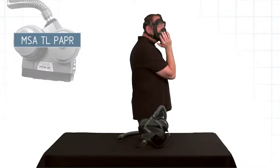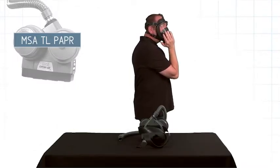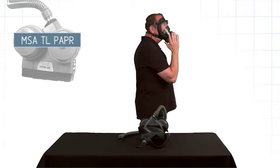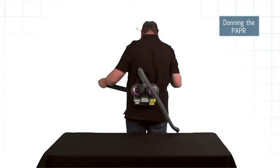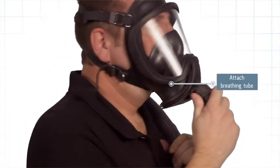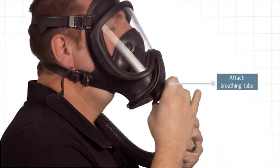Perform a negative pressure seal check by covering the facepiece opening, inhale gently and hold breath for 10 seconds. Don your PAPR and attach your breathing tube to the facepiece and adjust for comfort and breathing tube alignment.